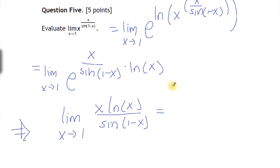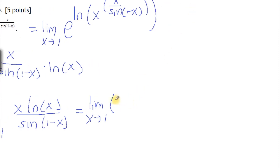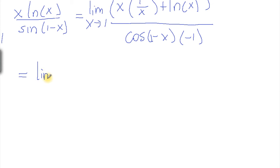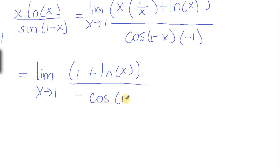So what is the derivative of the top? The derivative of x times log of x is a multiplication, so we have to use the product rule. It's x times the derivative of log of x, which is 1 over x, plus log of x times the derivative of x, which is 1. For the bottom, the derivative of sine of one minus x: the derivative of sine is positive cosine, and the derivative of the inside by chain rule is just minus one. So in reality we have the limit when x goes to one of x times one over x — which is 1 — plus log of x, over minus cosine of one minus x.